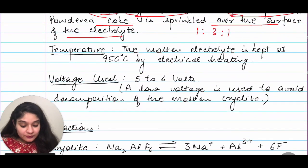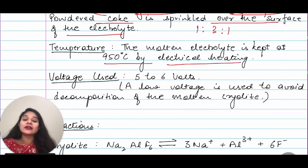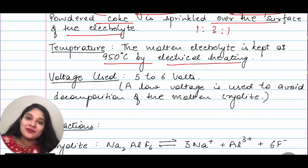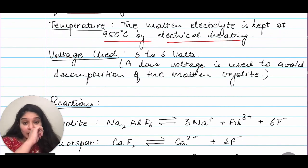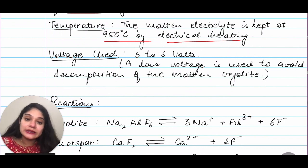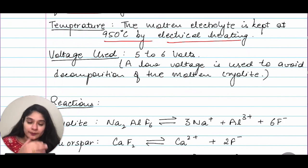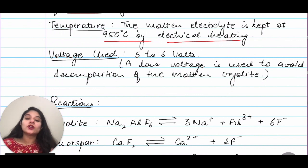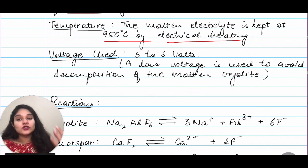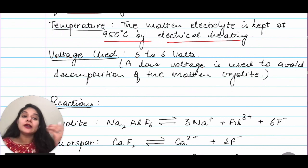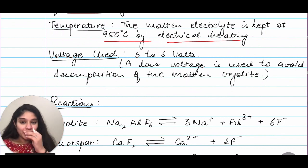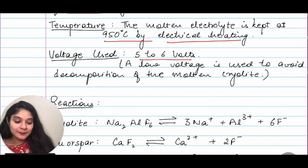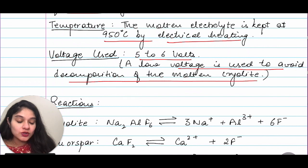The voltage used is 5 to 6 volts — a low voltage. Why? If a higher voltage is used, your cryolite may decompose. Instead of acting as a solvent in the electrolyte, it may start decomposing due to high voltage. So a low voltage of 5–6 volts is used to avoid decomposition of molten cryolite.